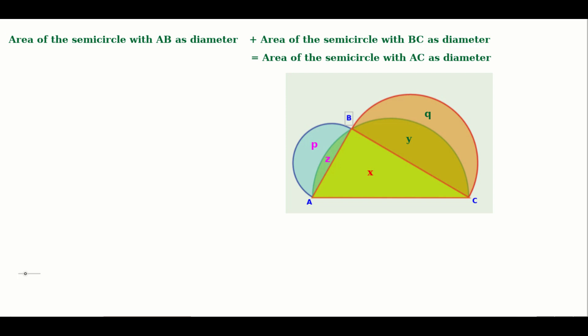From the figure, the semicircle with AB as diameter contains two parts with areas P and Z, so its area is P + Z. The semicircle with BC as diameter has parts Q and Y, so its area is Q + Y. Therefore: (P + Z) + (Q + Y) = X + Y + Z. In this equation, Y and Z appear on both sides, so we can cancel them, giving P + Q = X. Here P is the area of the blue crescent, Q is the area of the red crescent, and X is the area of the right-angled triangle — which is exactly what we needed to prove.